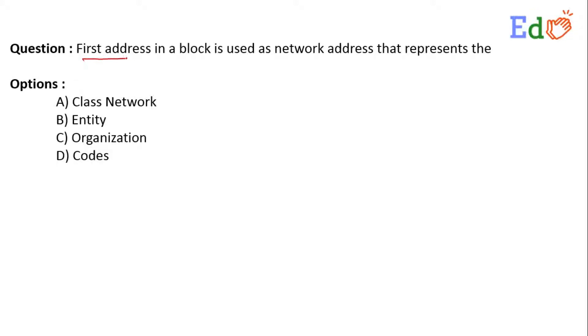Now the question is that first address in a block is used as network address and that represents the, having four options: option A, Class Network; option B, Entity; option C, Organization; and option D is Codes.